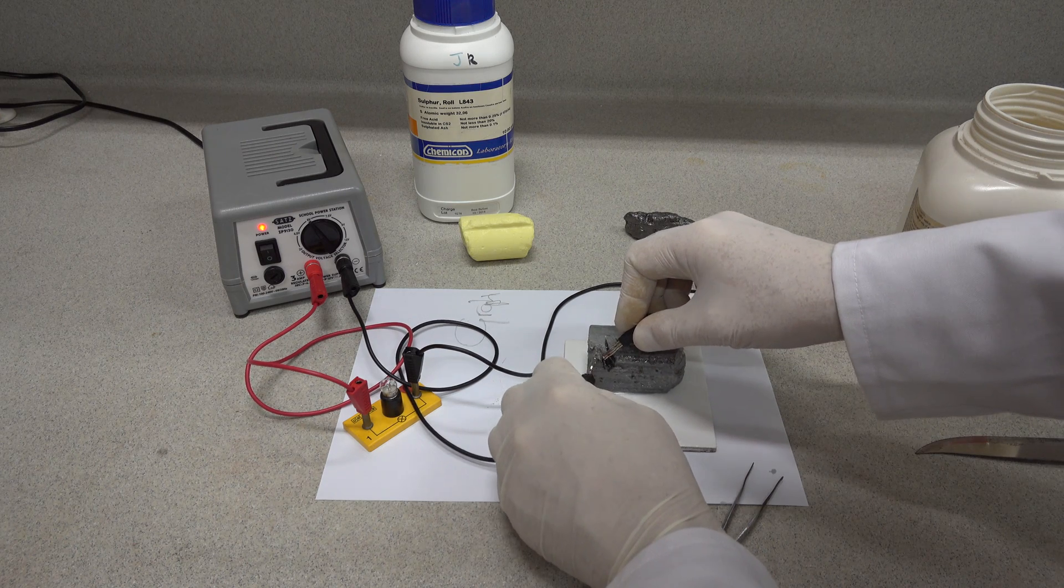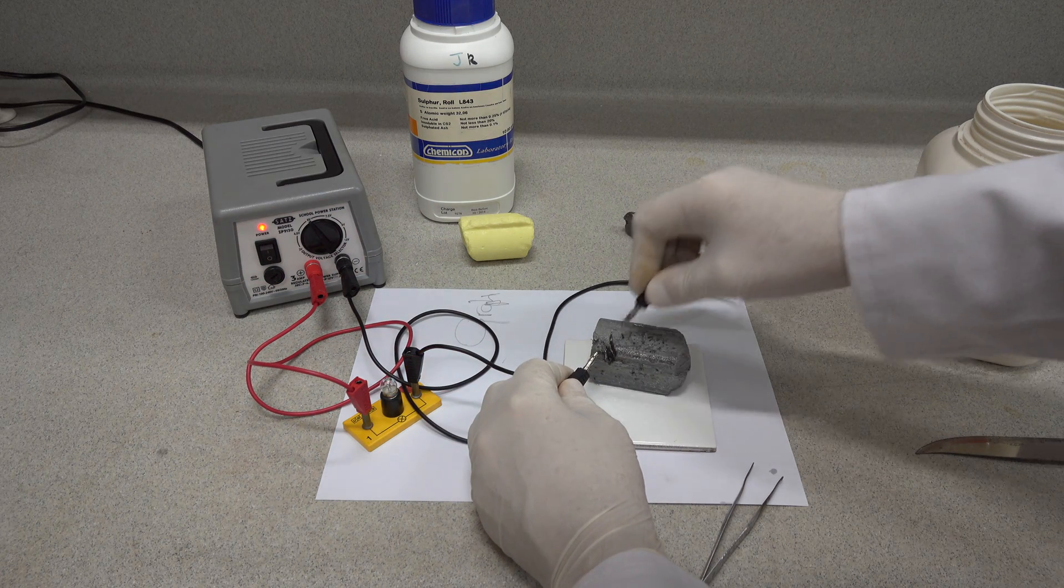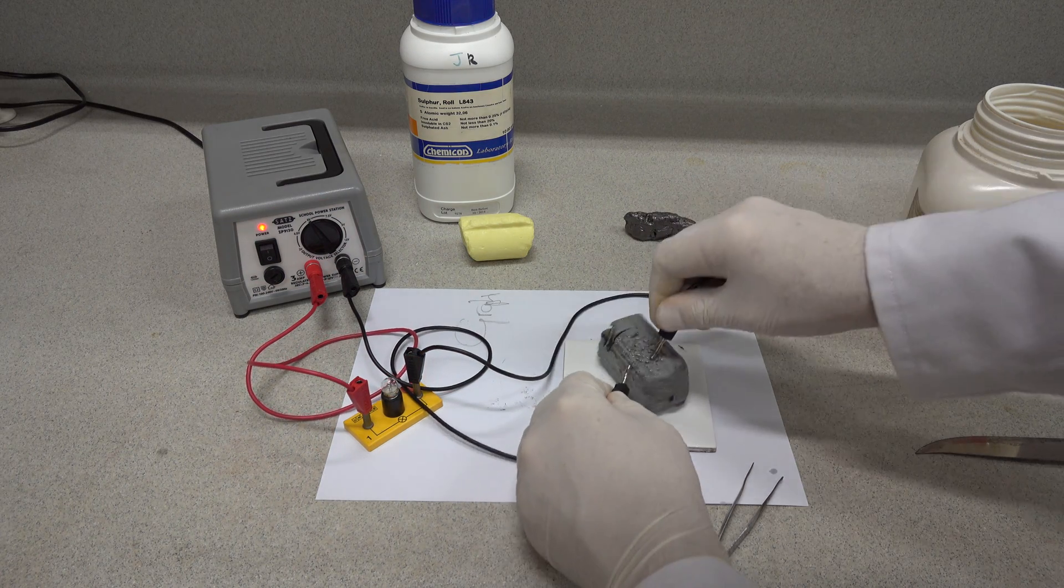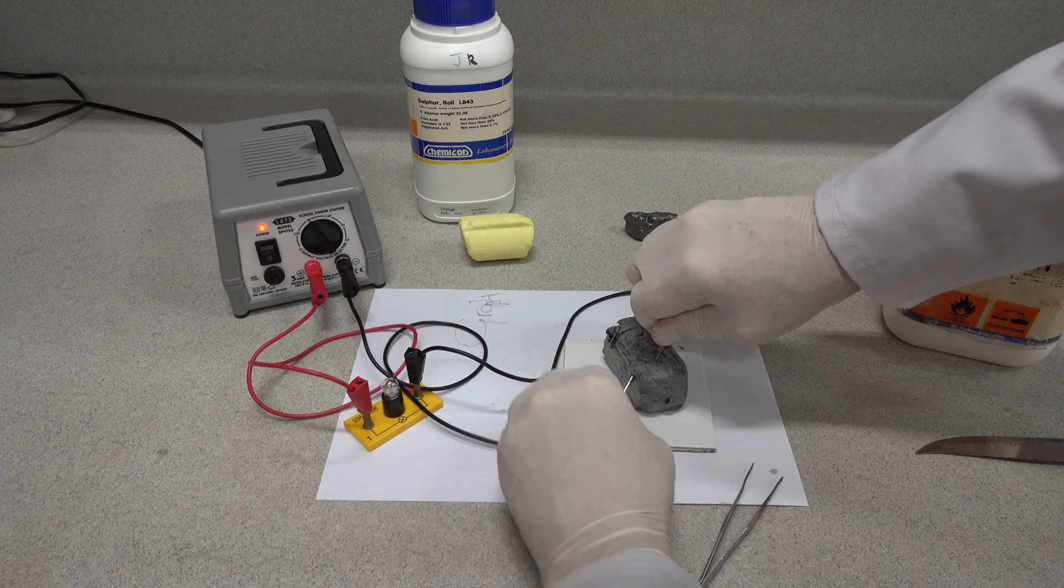Here's lithium. And you might see, yes, either side of the contacts there, we can get the lithium to light. Can we get it across the metal? I presume not because of the oil that's surrounding it.